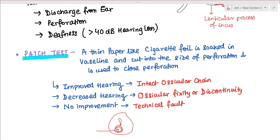Earlier when there was perforation, vibrations went through the perforation and even though the ossicles were not moving, they directly struck the oval window and we could still hear. But now we have patched it up and closed the perforation, so vibrations are not reaching through. There is no vibration of the oval window and we are hearing even less. So if there is decreased hearing, we can say there is ossicular fixity.